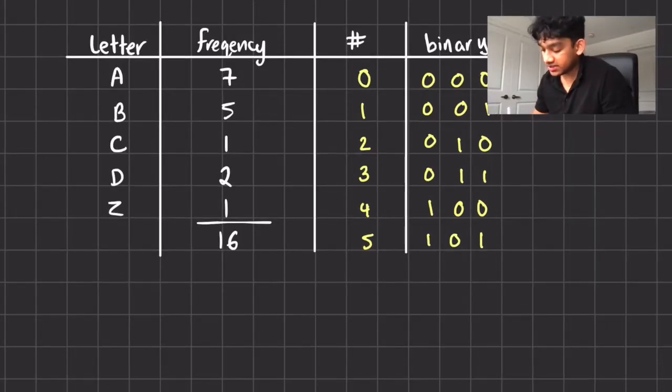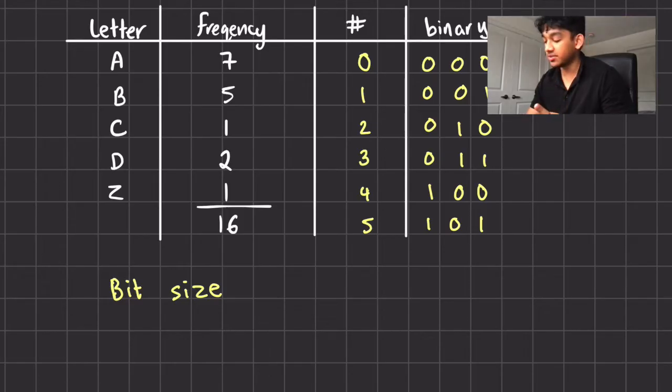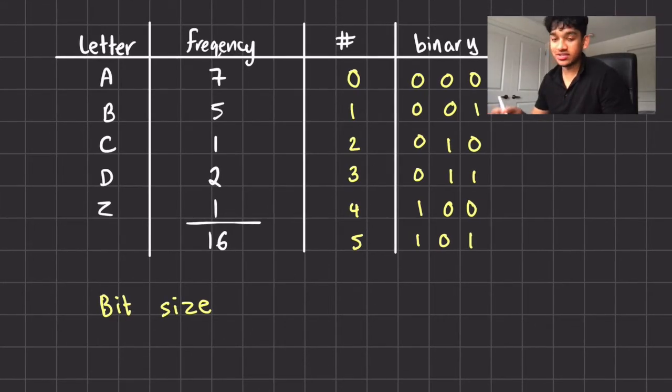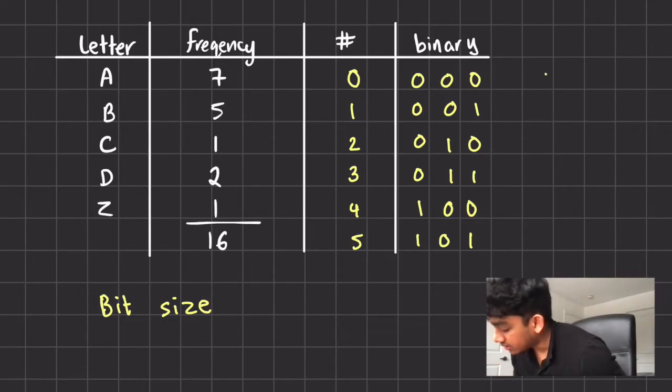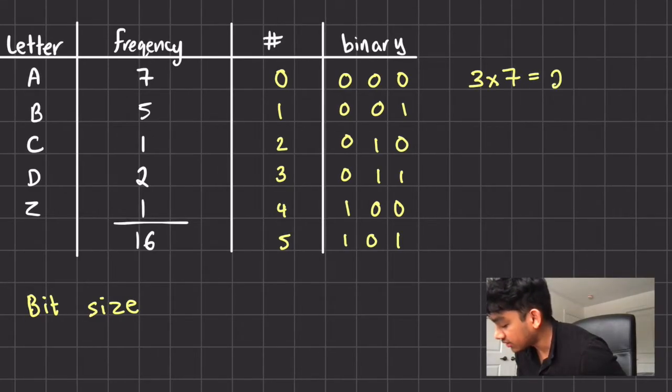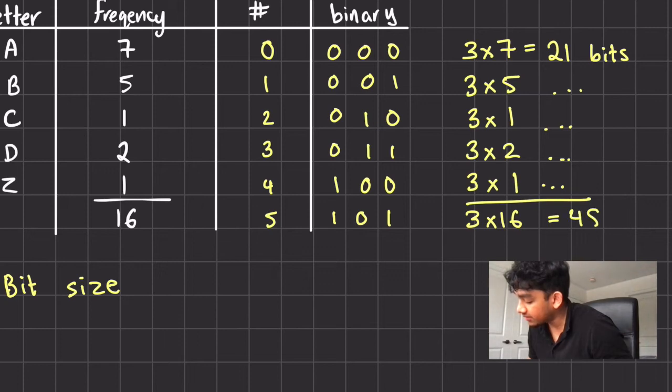We can actually see the bit size here by calculating it. So we know that A takes three bits. B, C, D, Z, they all take three bits each. There's seven A's and each A takes three bits so that we know three times seven is 21 bits. You can also just do three times 16 because we know that there's 16 characters and each one takes three bits, which is just 48 bits.